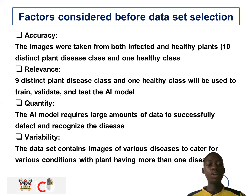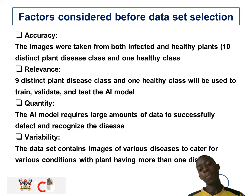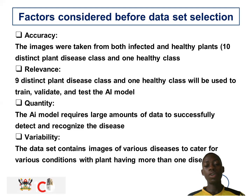For the case of quantity, the AI model would use large amounts of data to successfully detect and recognize the diseases. For variability, we collected various sets of images including various diseases to cater for conditions where a plant can have more than one disease.